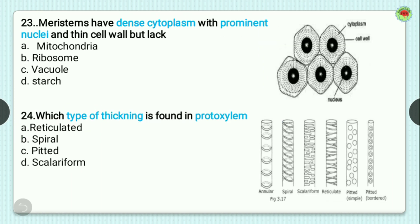Question number 23: meristems have dense cytoplasm with prominent nuclei and thin cell walls but lack? Options are mitochondria, ribosomes, vacuole, and starch. Meristem is a continuously dividing cell that has cytoplasm, nucleus, and cell wall. Only the vacuole is absent in meristems. In the image you can see the cytoplasm, nucleus at the center, and cell wall. So the correct option is vacuole.